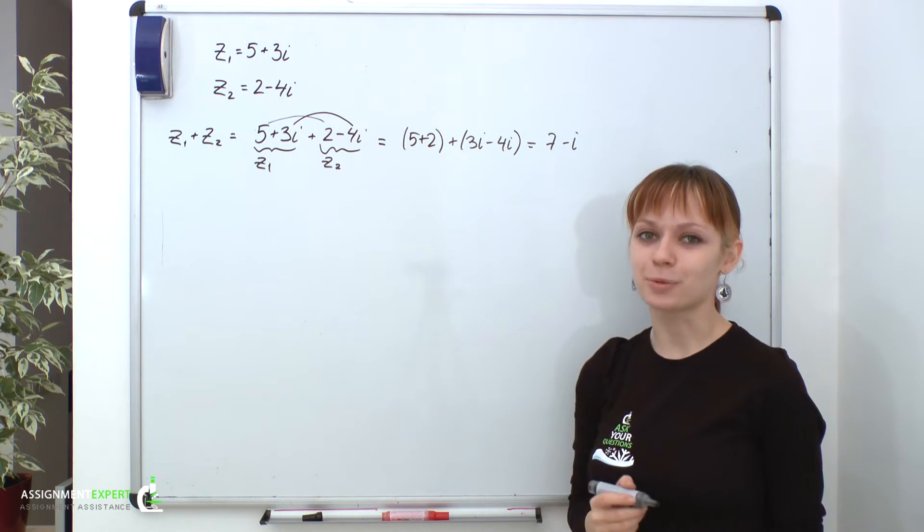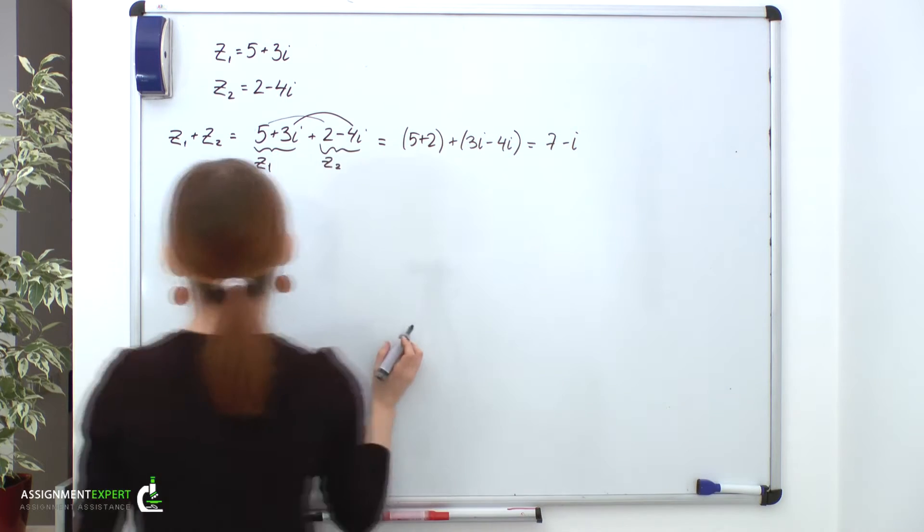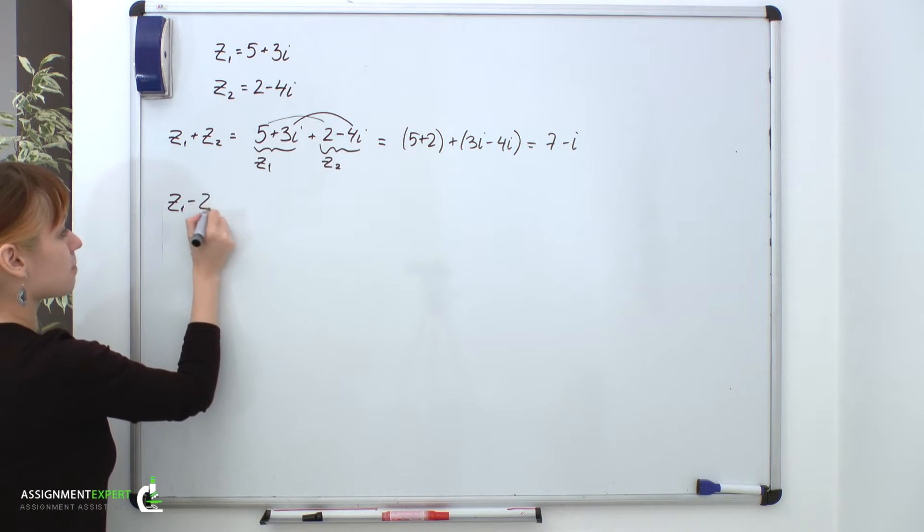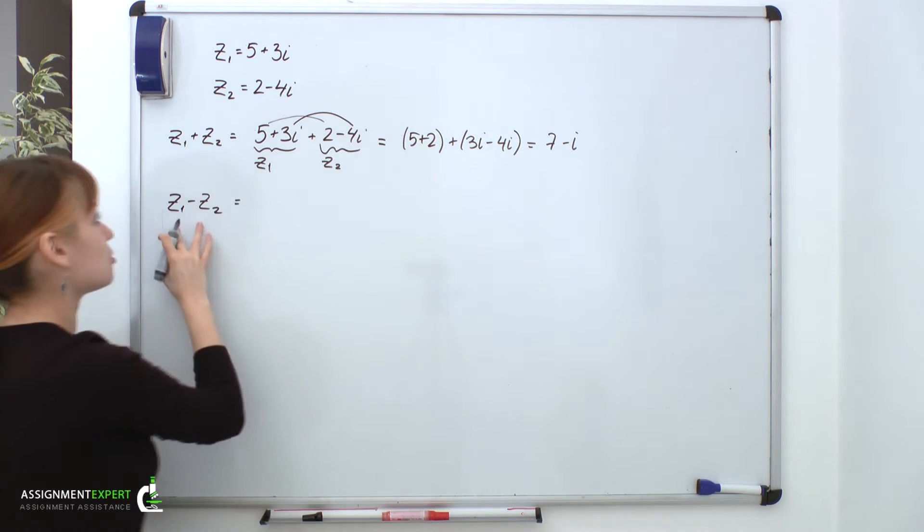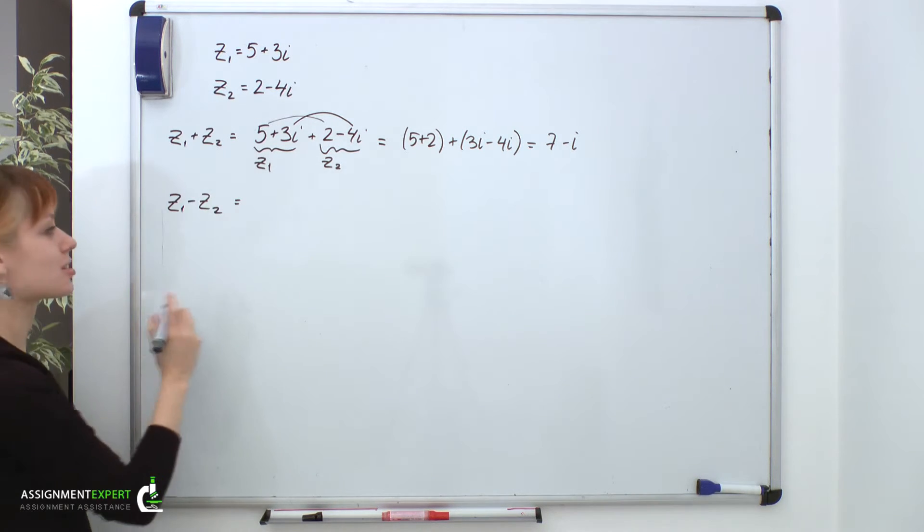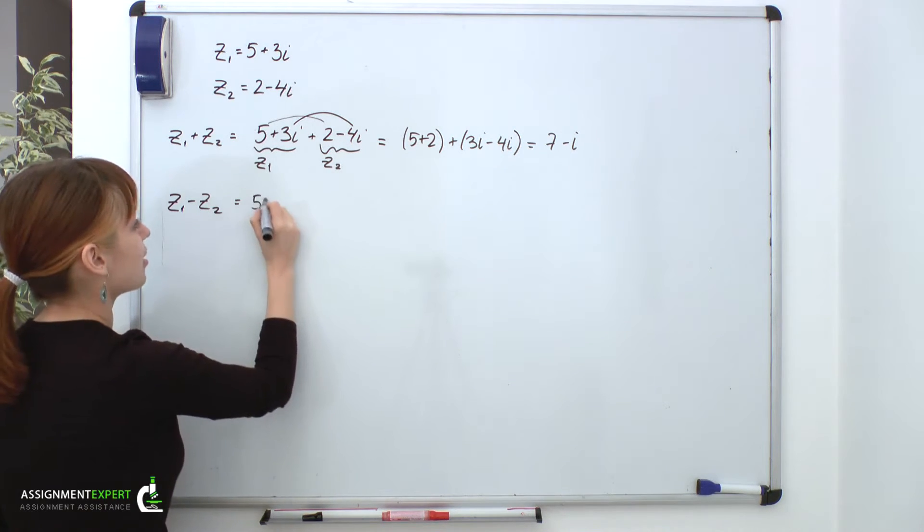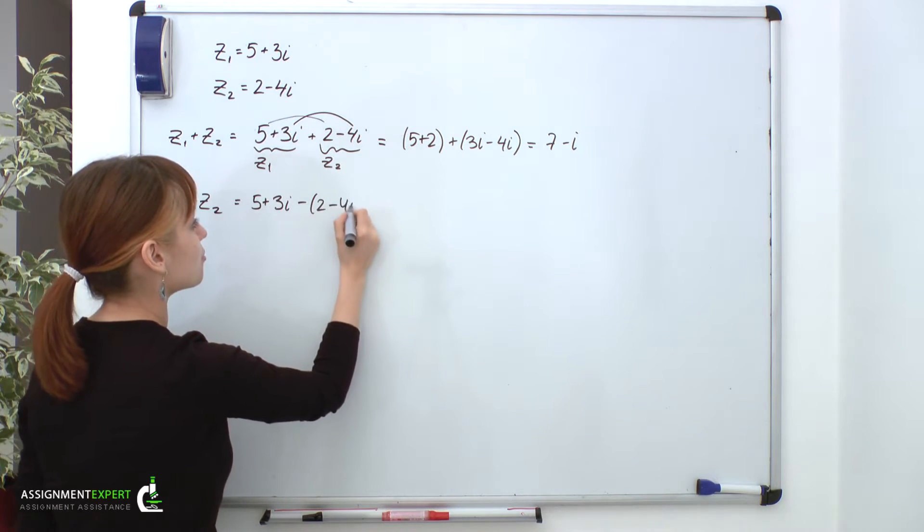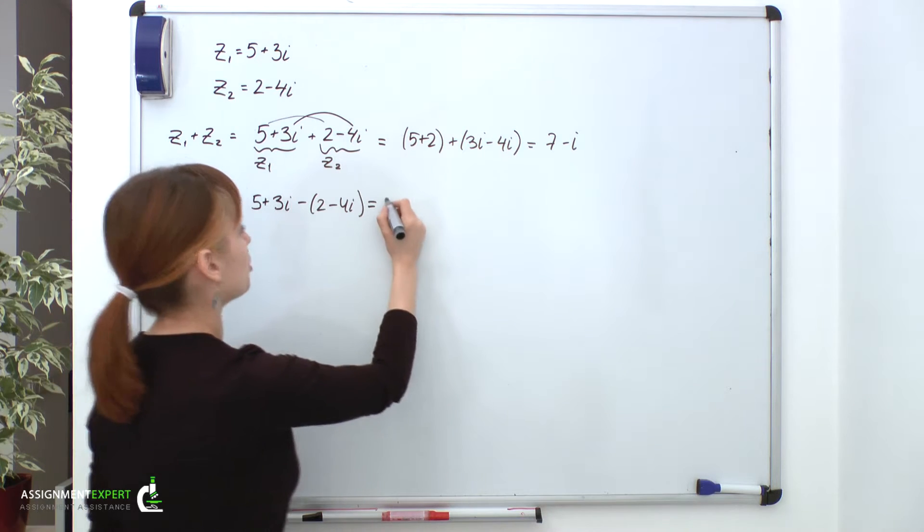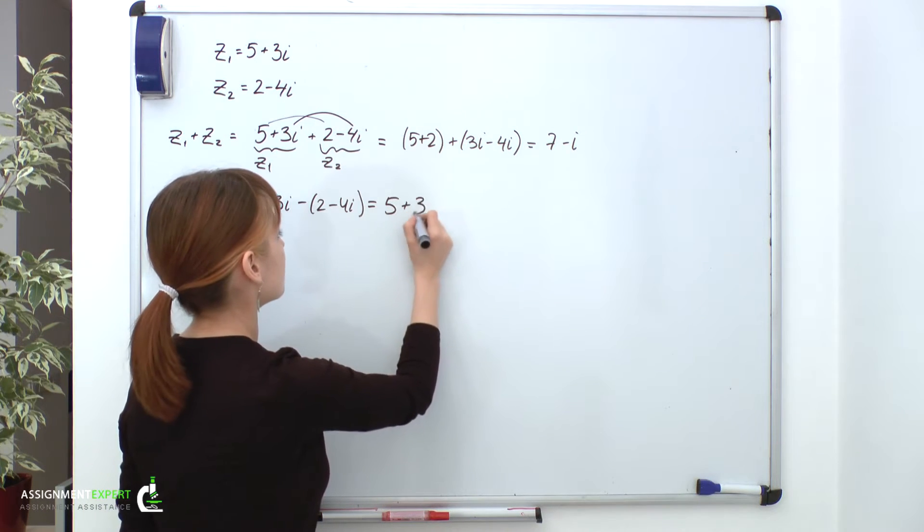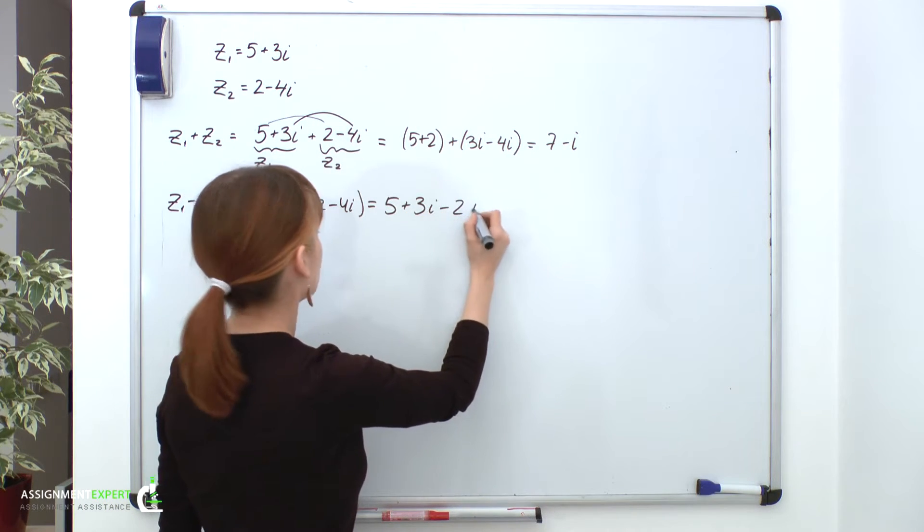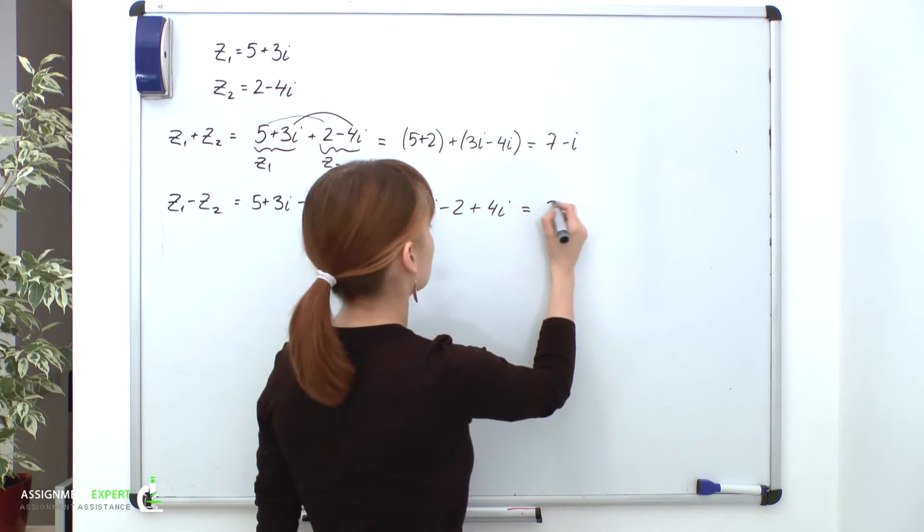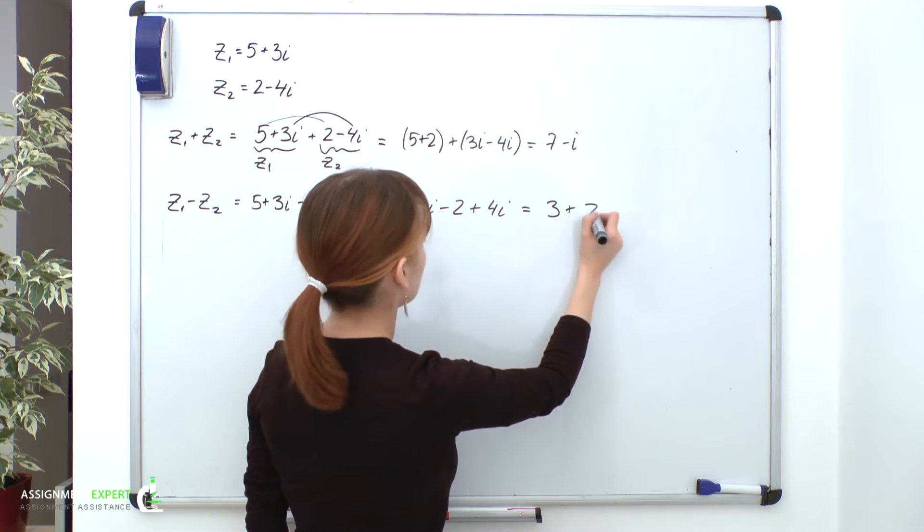So, subtraction is performed likewise. So, if we want to subtract Z2 from Z1, we'll again treat these two numbers as dual-termed expressions. So, we'll have 5 plus 3i minus 2 minus 4i, which equals 5 plus 3i minus 2 plus 4i. And that equals 3 plus 7i.